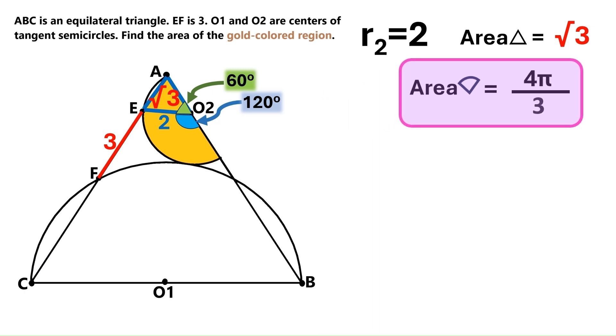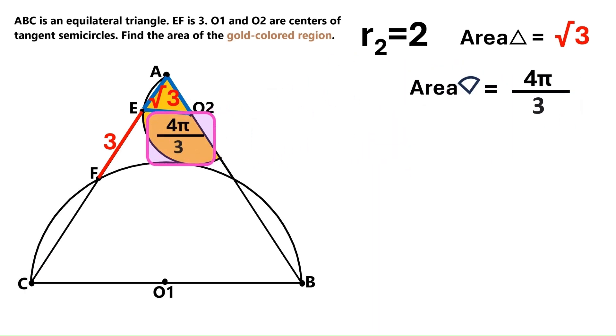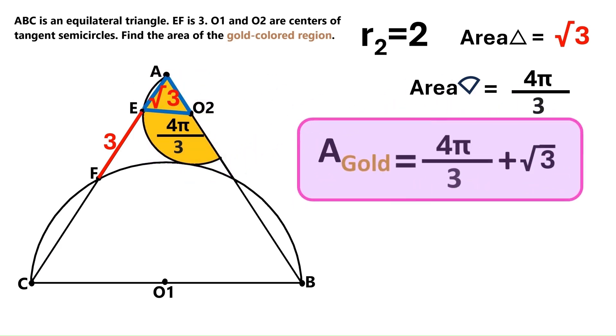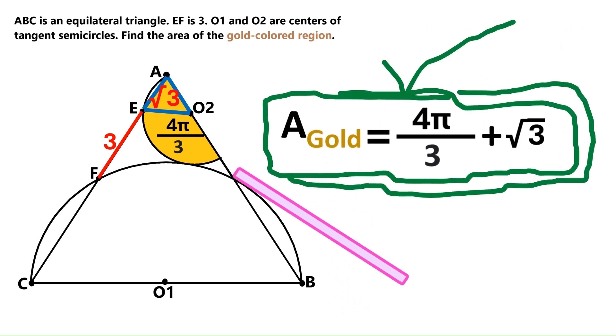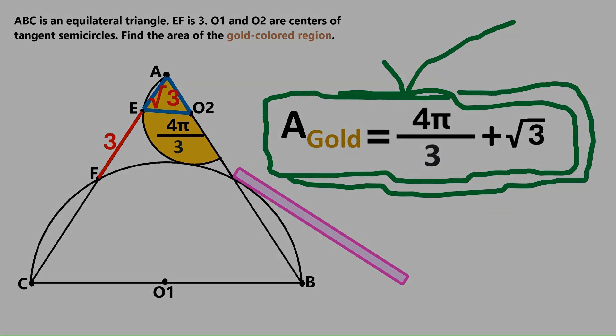Now the last step. Let's put 4 pi over 3 here and then add up the areas of these two regions. And the area of the gold-colored region turns out to be 4 pi over 3 plus the square root of 3. There we are, people. Here is the gold-colored area we have been looking for. If you enjoyed this video, make sure you push the like button and don't forget to subscribe for future videos. Have a good day and see you soon.